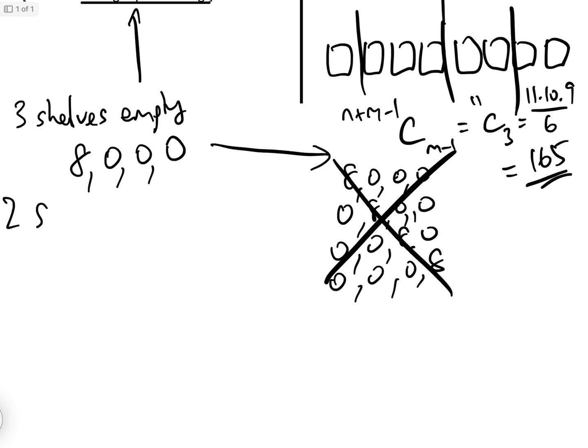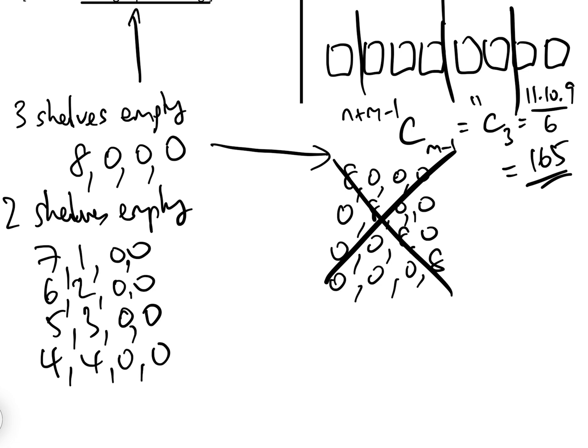So what about two shelves empty? Well, if two shelves are empty, how can we distribute eight identical books between the four shelves? Well, with two shelves empty, we've got 7, 1, 0, 0, or 6, 2, 0, 0, or 5, 3, 0, 0. Remember, we're not bothered about order because they're identical shelves. Or 4, 4, 0, 0. So that is a total of four, and that one there is one.